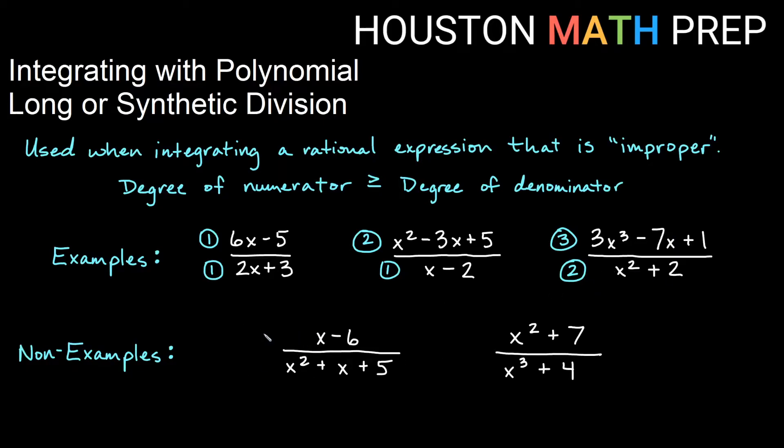If we look at our non-examples here we have degree one on top over degree two, that would be a proper fraction when you have more degree on the bottom, so we would not use this method. And this is degree two on top, degree three on bottom, so again we don't have at least as much degree in the top as we do on the bottom. Let's work through these three examples.